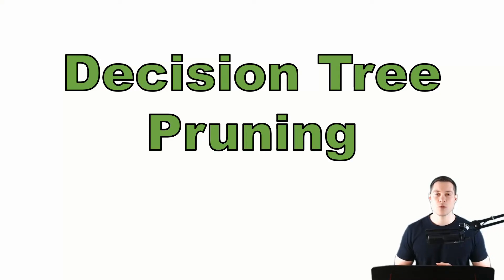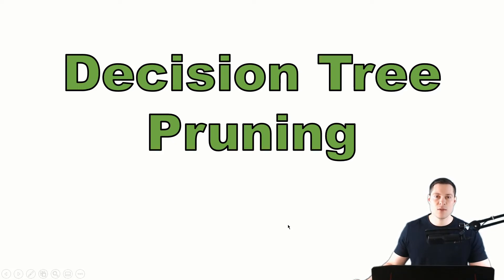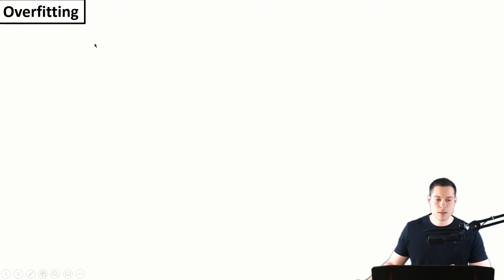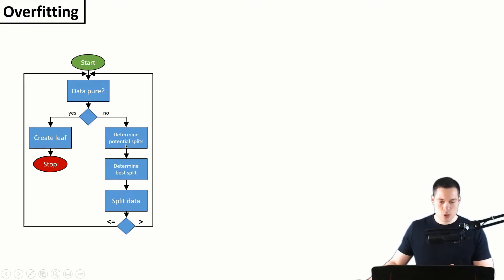Welcome to a new video. In this video we're going to cover how decision tree pruning works. First of all, let's answer the question: why do we even need to prune trees? We need to prune them because they tend to overfit the training data. To understand this, let's look at the flowchart of the basic decision tree algorithm, which we have already covered in some previous videos.